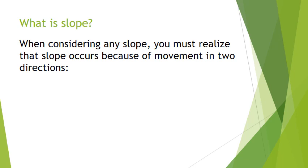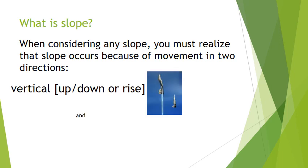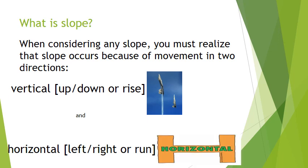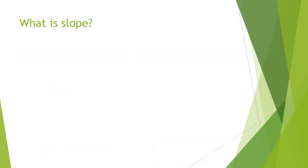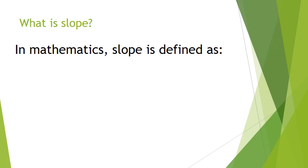When considering slope, we have to realize that there's movement in two directions. First, we've got vertical up and down, which we call the rise, and horizontal, which means left to right, or the run. In mathematics, slope is defined as the rise over the run.